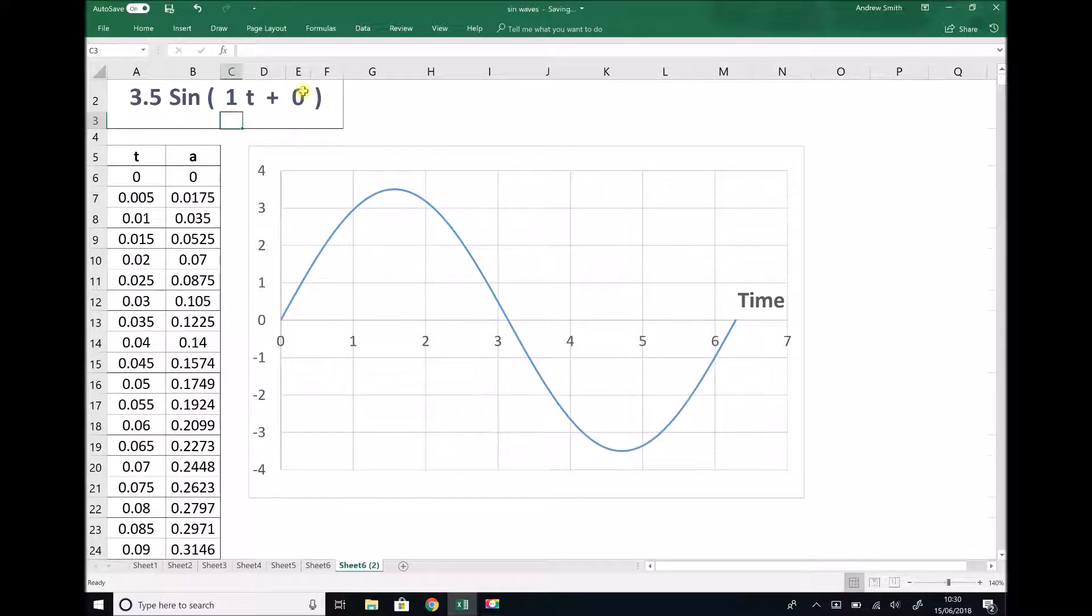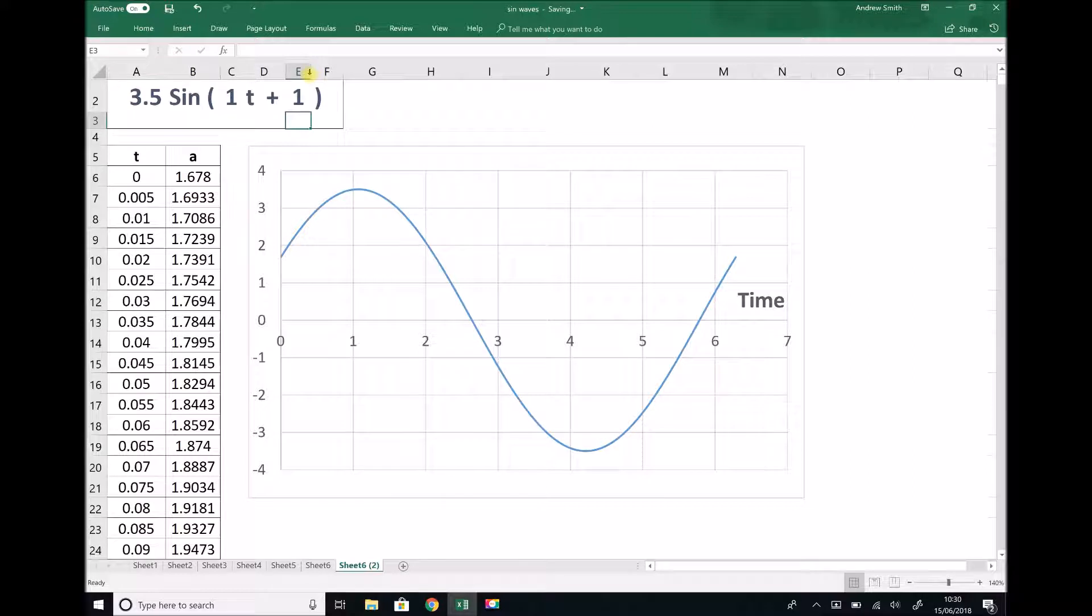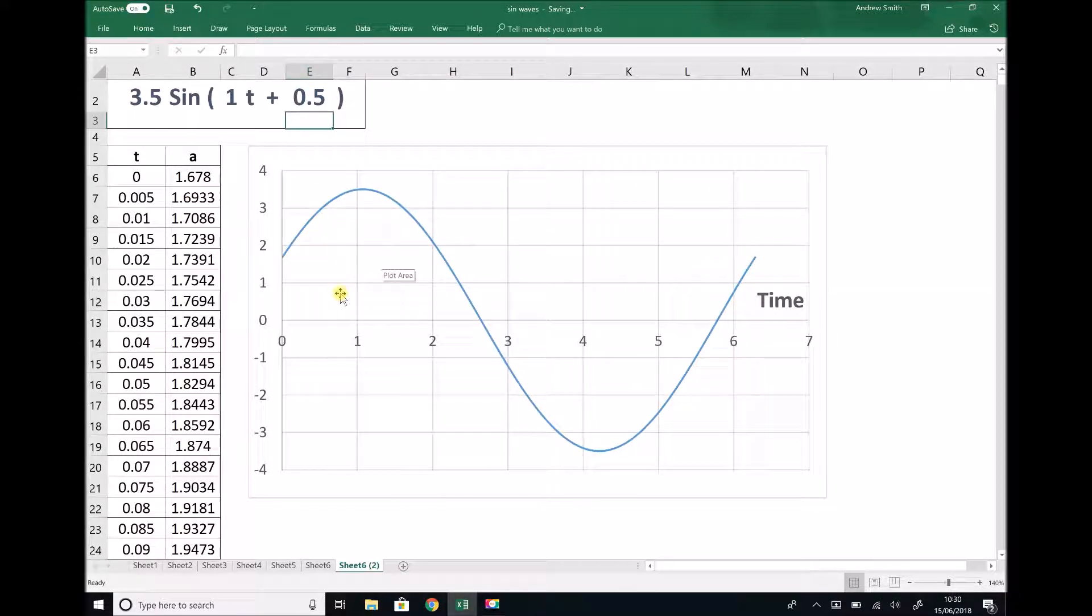Now finally we have something called the phase angle, and what the phase angle changes is the starting point of our graph. So if I change that phase angle for now to 0.5 as an example, then what we see happen to our graph is that it's been shifted in the negative direction. It's been shifted from right to left.